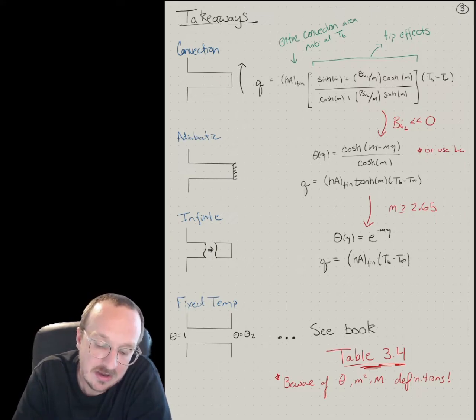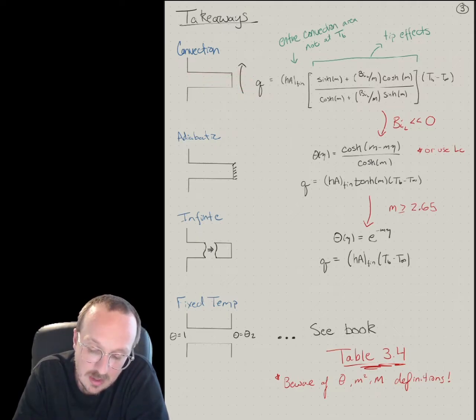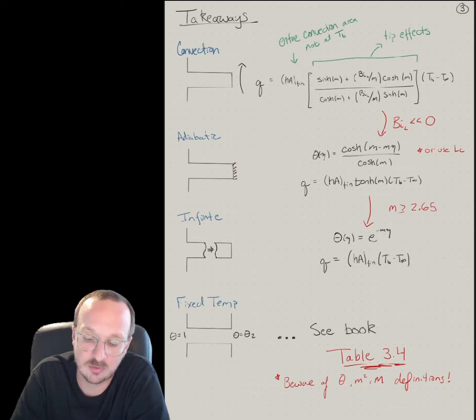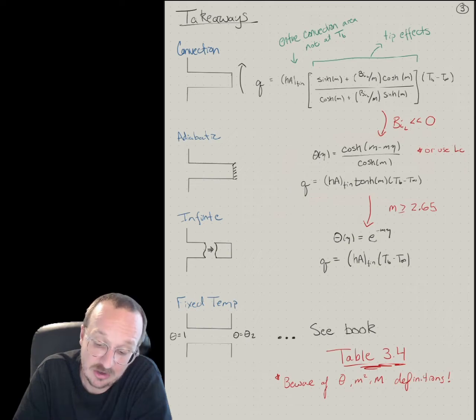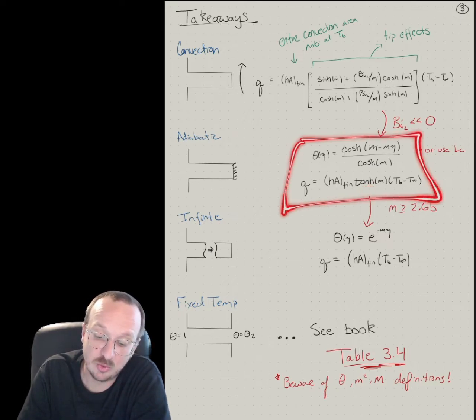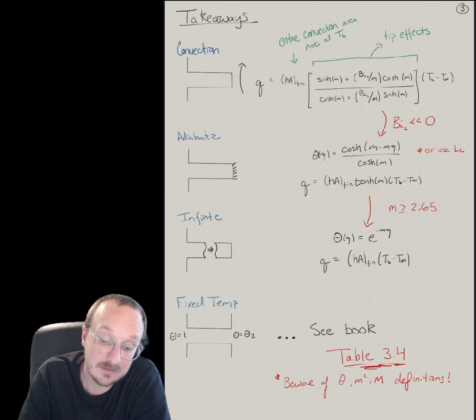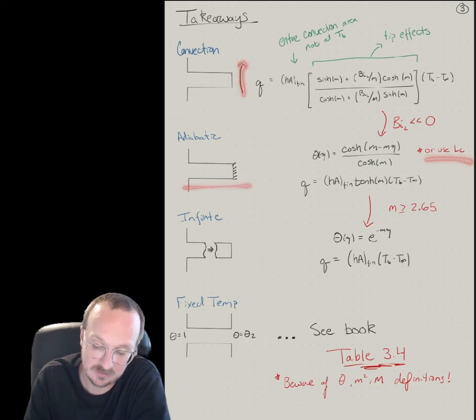Now, if convection is not very good at this surface relative to conduction, then you can basically assume heat loss at this tip is negligible. So you have a very low Biot number. So then we've got a much simpler expression. You actually have a temperature profile and this tip effects simplifies to just hyperbolic tangent, or this is the expression you would use. If you had tip effects which are important, you can just use the corrected length and an adiabatic fin tip.